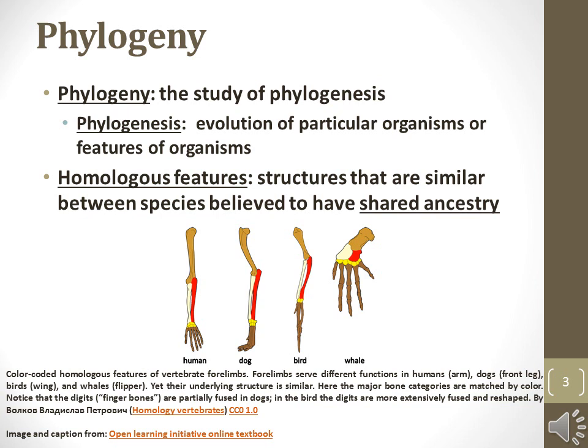Homologous features are structures that share the same evolutionary origins, although the functions may differ. For example, human arms, dog legs, bird wings, and whale fins are homologous. Insect wings are also homologous to the gills of crustaceans.